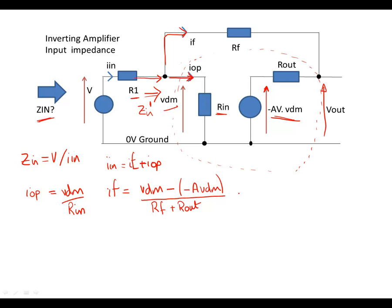Now if we just tidy that up just a little bit. I mean, I don't like to look at that equation. You've got a double negative here. So if we just tidy that up, we should actually end up with something like Vdm into 1 plus A, brackets, all divided by our feedback resistor plus our output resistor Rout. So all we're doing is just tidy that one up a little bit and we've got a nice expression at the top there.